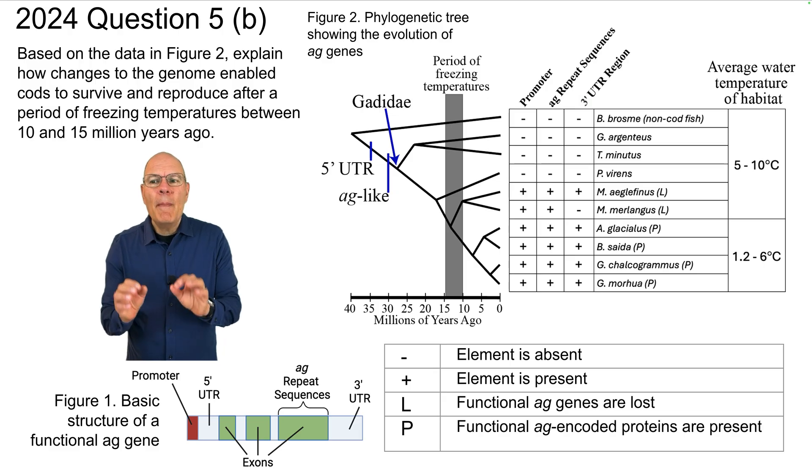And here's the question. Based on the data in figure two, explain how changes to the genome enabled cods to survive and reproduce after a period of freezing temperatures between 10 and 15 million years ago. Pause the video, answer the question, and then hit play to see my answer.